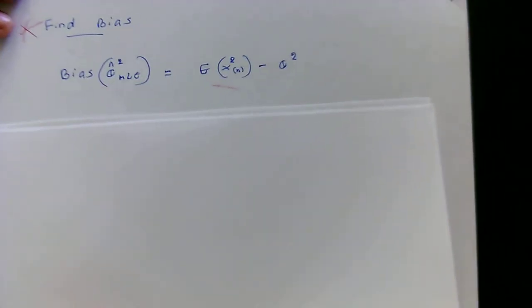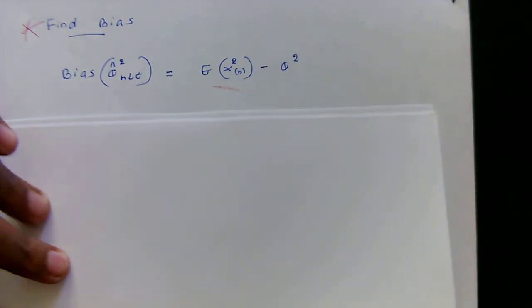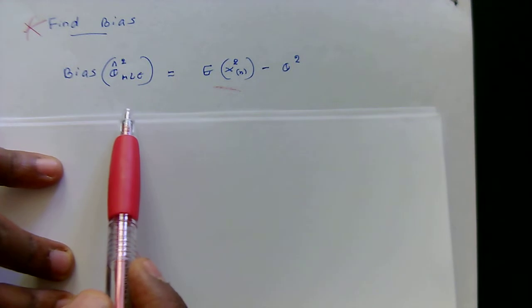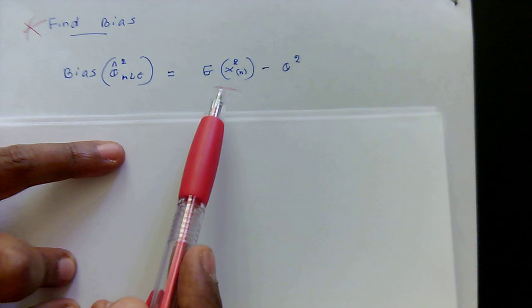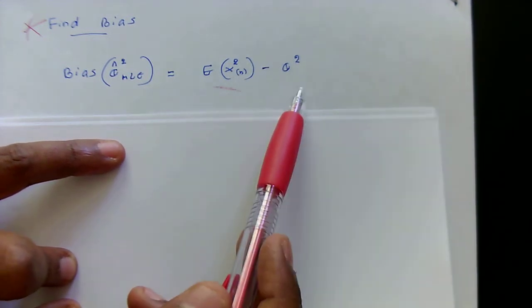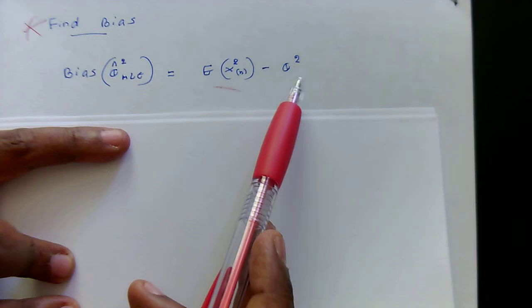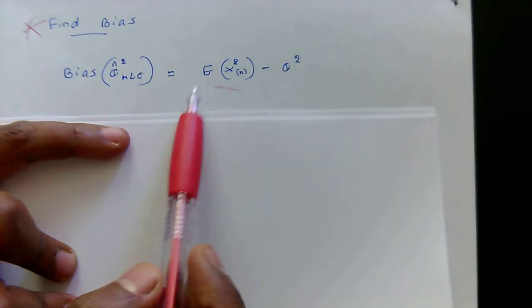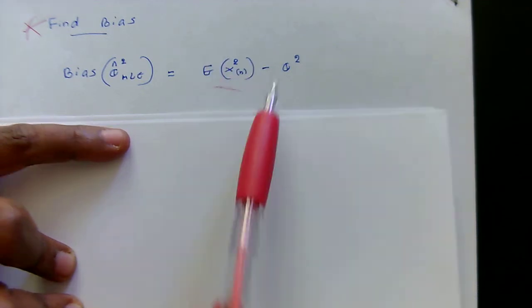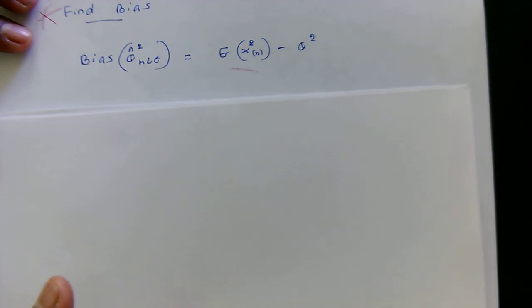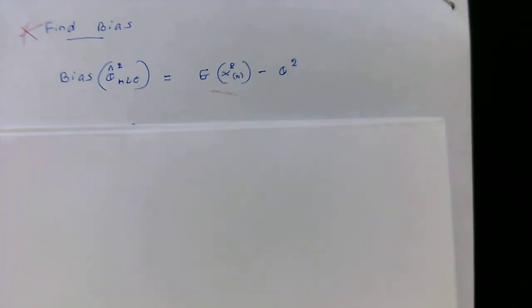With this PDF, I can now find the bias and variance components of the estimator. First I'll find the bias. Recall that bias equals the expectation of the estimator minus the unknown parameter. Here the unknown parameter is theta squared, since our estimator is for theta squared. To find the bias I need the second moment of the largest order statistic.